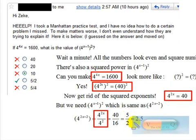So then we basically change this up. 4 to the x minus 1, all squared, that became 4 to the 2x minus 2, which is right here.